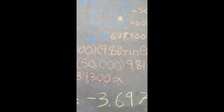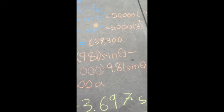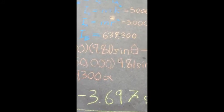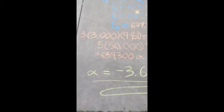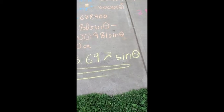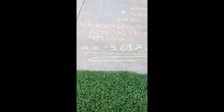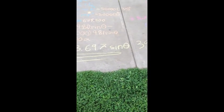And IB, the total of those two, is 639,300. We plug that all in and it gives us alpha. Alpha equals negative 3.67 sine theta.